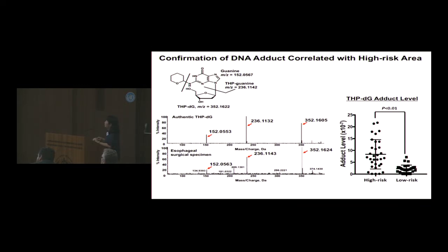We also analyzed exposure levels using blood samples collected from the high-risk and low-risk areas. The DNA adduct THP-dG was observed in both areas, but the exposure level appears to be higher in the high-risk area.